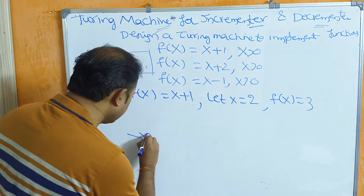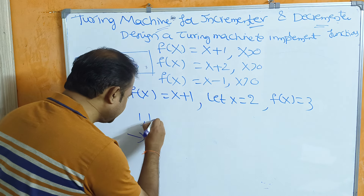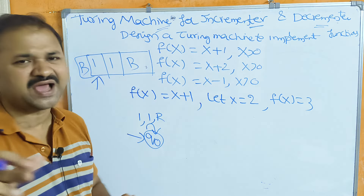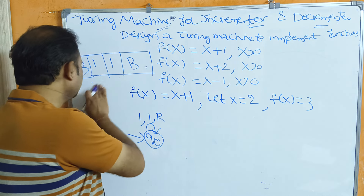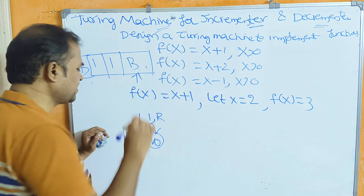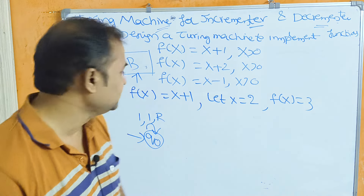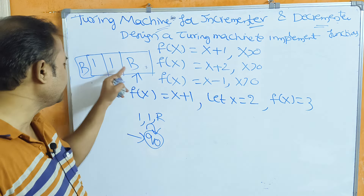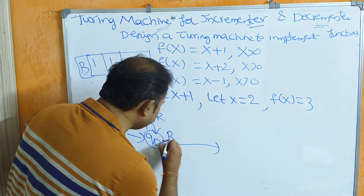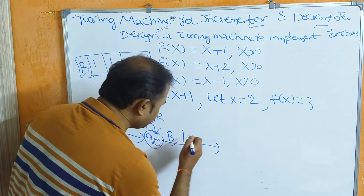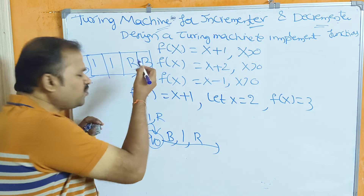We will write a simple function in Q0. When we read the blank symbol, we can replace the blank symbol and move to the right side. Then we can replace the blank symbol again.